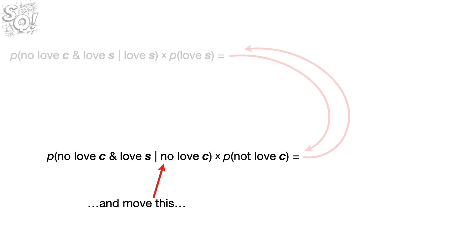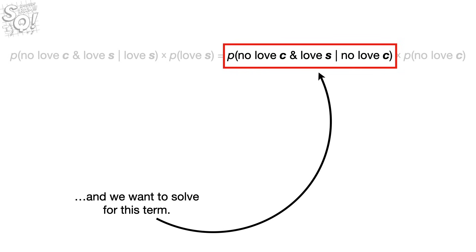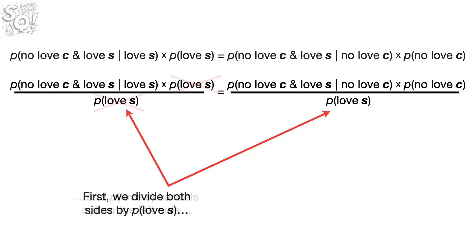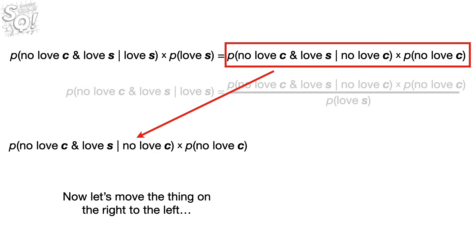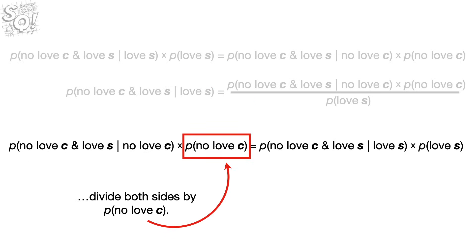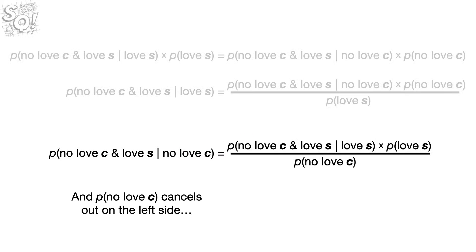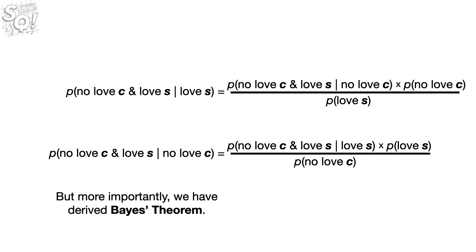So let's rearrange the equations. We want to solve for the first term and the second term. Starting with the term on the left, we divide both sides by the probability that someone loves soda — and the probability that someone loves soda cancels out on the left side. We have solved for that term. Then we move terms and divide both sides by the probability that someone does not love candy — and that cancels out on the left side. We have solved for the other term. In both cases, we won the bet with Statsquatch, because we no longer need to know the probability that someone does not love candy and loves soda. But more importantly, we have derived Bayes' theorem. Double bam!